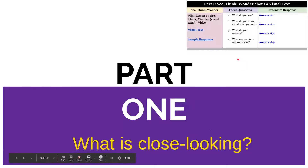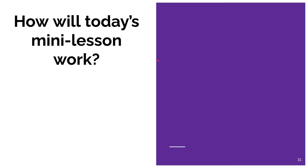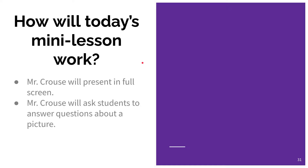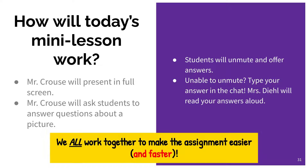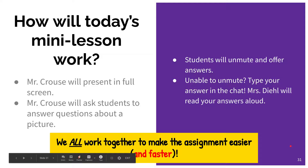Part one: what is close looking? Here's how today's lesson will work — Mr. Cross will present in full screen. I will then ask students to answer questions about a picture I provide. Students will unmute and offer their answers; if unable to unmute, you can type your answer in the chat and I will read your answers aloud. If you're watching this video because you were absent from class, you'll be prompted to pause the video at certain points and do the material on your own.